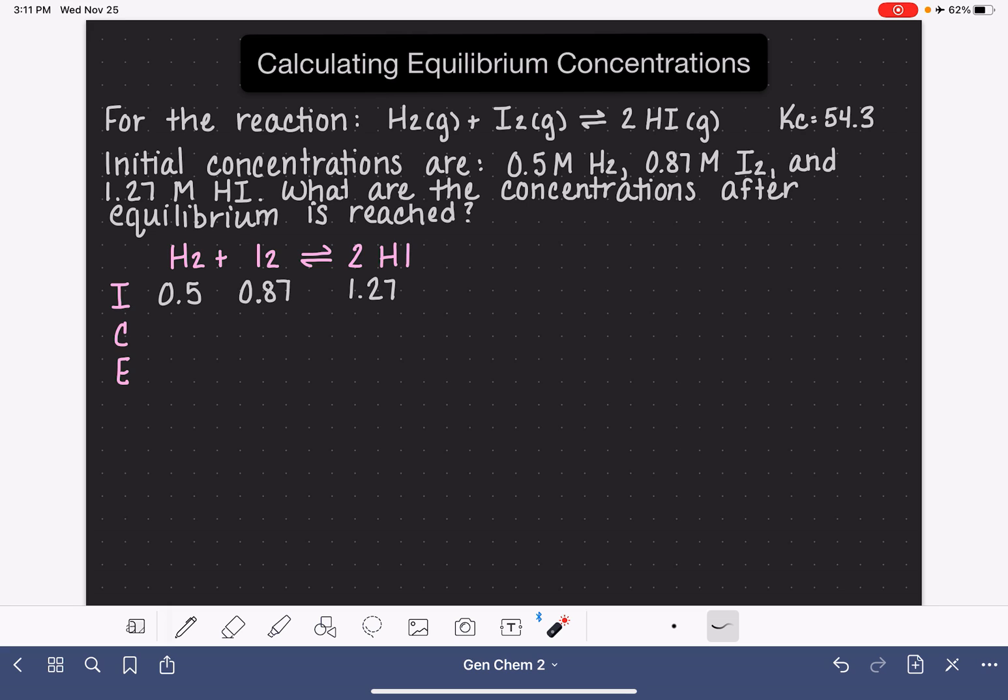The next row, C, represents the change. This is representing the amount that each one of these substances will change as the system approaches equilibrium. This particular row, we don't know exactly what the numerical values are of the change. So we don't know exactly how much H2 will react, we don't know how much I2 will react, and we don't know how much HI we're going to make.